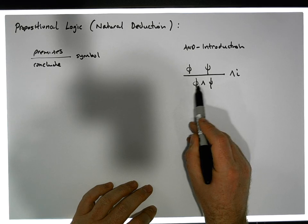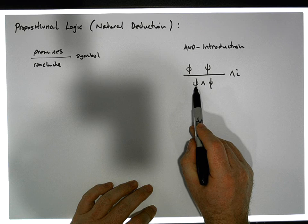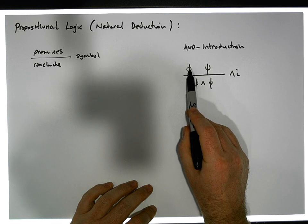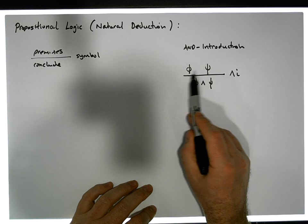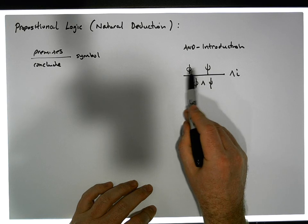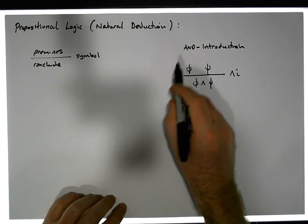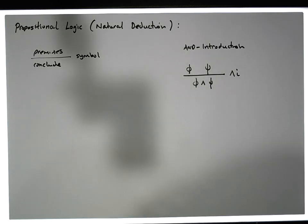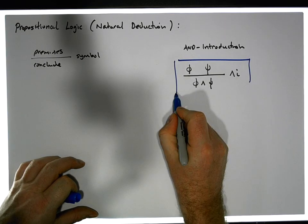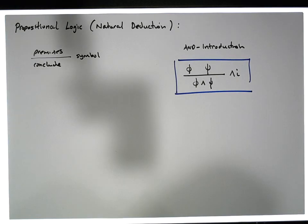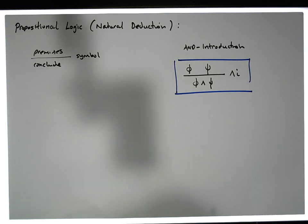To introduce the AND connective, you need the left operand and the right operand. This rule tells us that to introduce phi AND psi, both phi and psi must have been deduced or assumed at some earlier stage within the proof. That's the AND introduction rule.